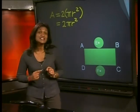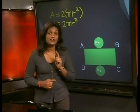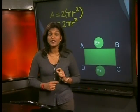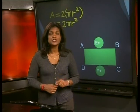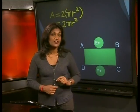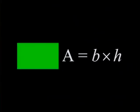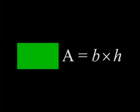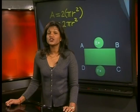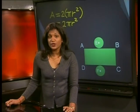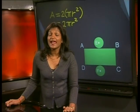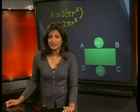Now we still need to calculate the formula for the rectangular part of the cylinder. Do you remember what the formula for the area of a rectangle is? Its area is equal to base times perpendicular height. So to find the area we will need to know the base and the height of the rectangle.